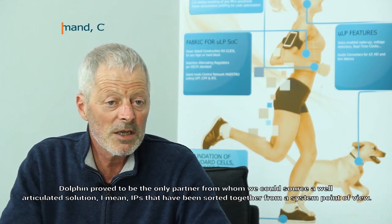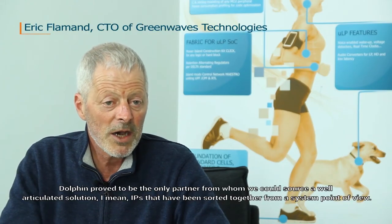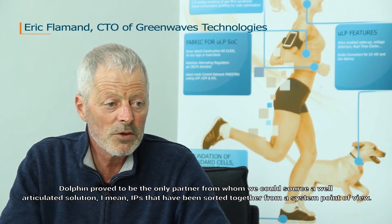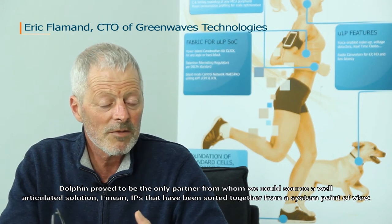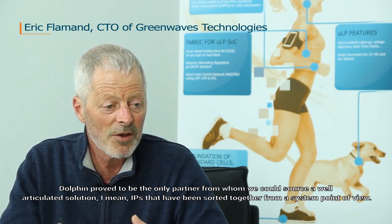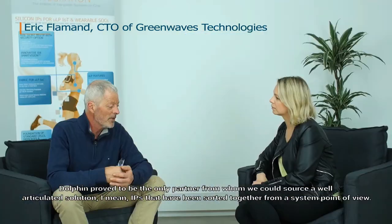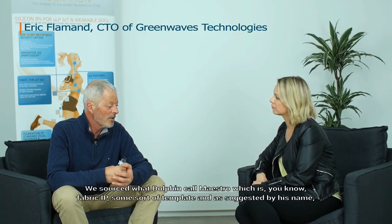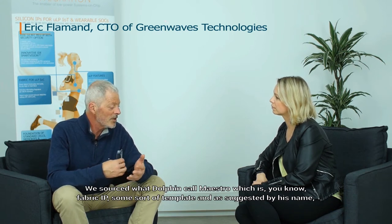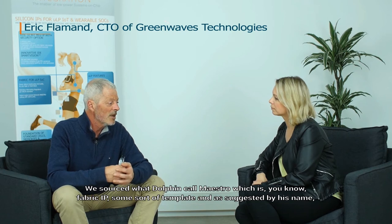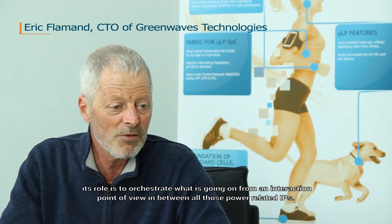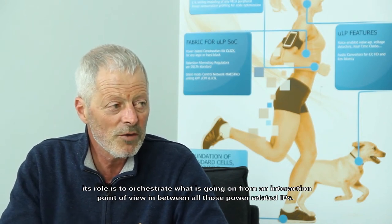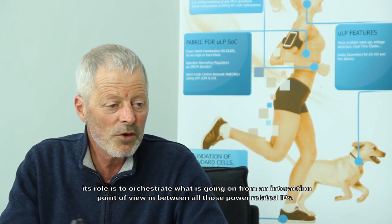DOLPHIN proved to be the only partner from whom we could source a well-articulated solution, meaning IP that has been thought together from a system point of view. We sourced what DOLPHIN called MAESTRO, which is a fabric IP, some sort of template, and as suggested by its name, its role is to orchestrate what is going on from an interaction point of view between all those power-related IPs.